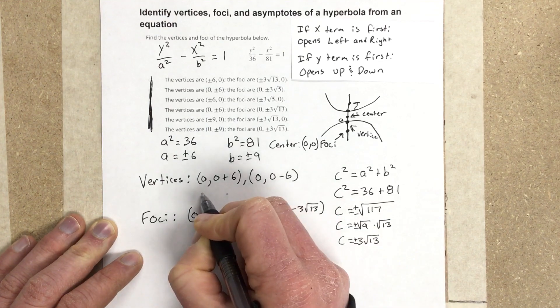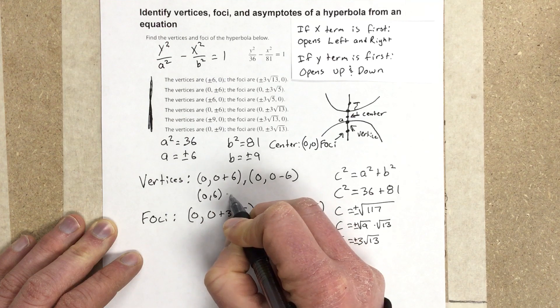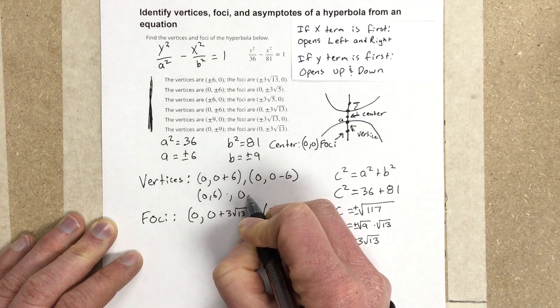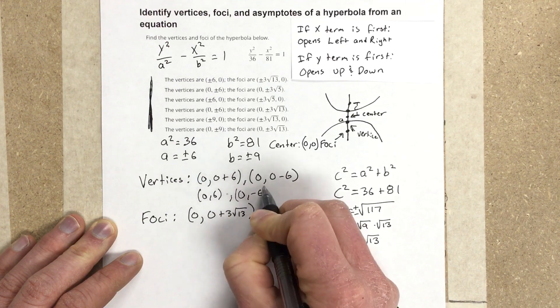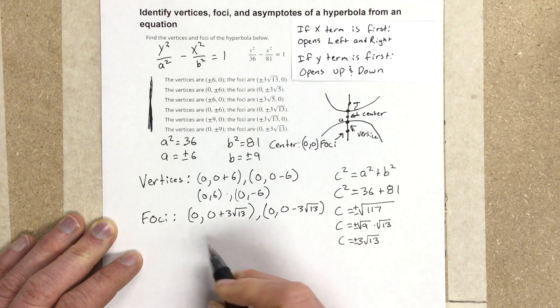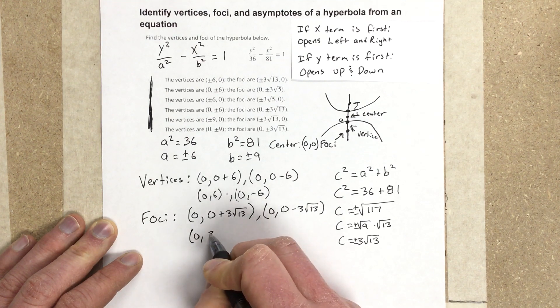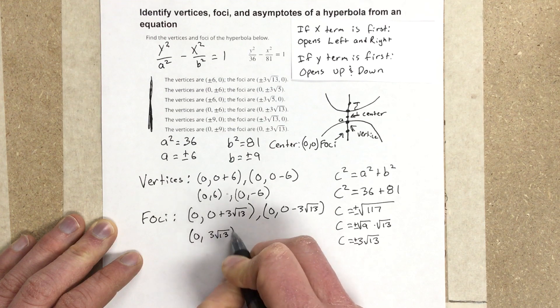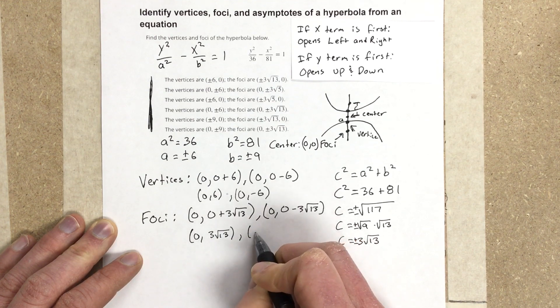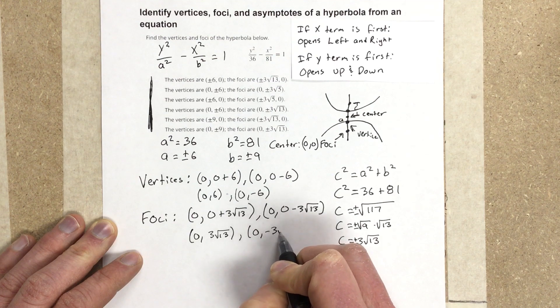So I end up with 0, 6 for a vertice, and then 0, negative 6 for the other vertice. And then for this one, I end up with 0, 3 root 13. And for this piece, I'd end up with 0, negative 3 root 13.